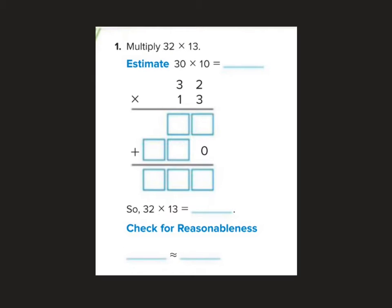All right, let's try one more problem here today. We're going to multiply 32 by 13. Our first step is to estimate: 30 times 10. 3 times 1 is 3, add my two zeros.